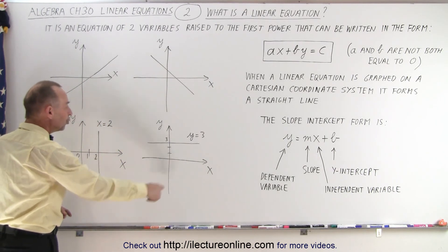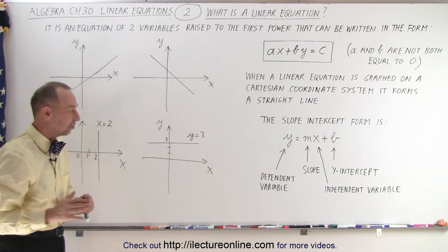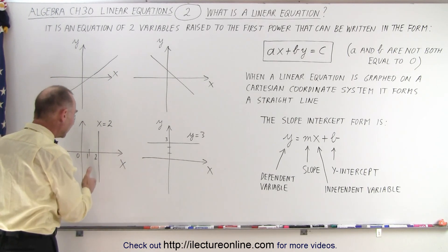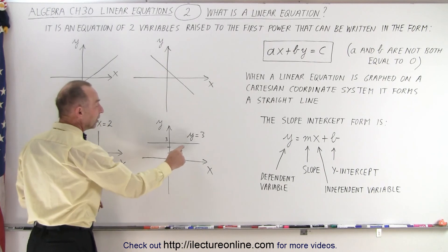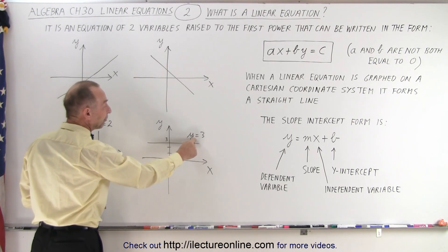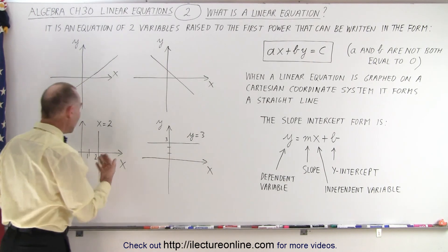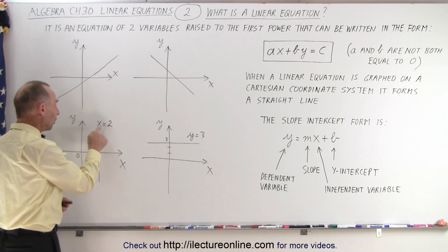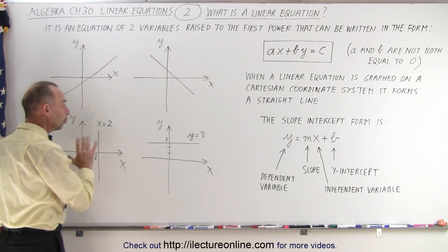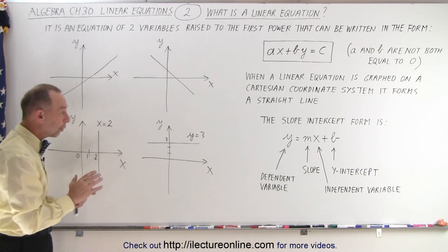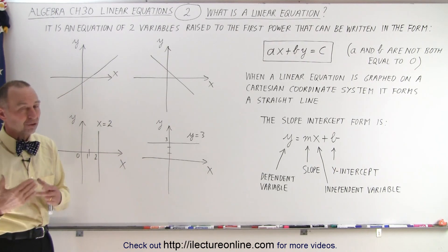Notice that the bottom two graphs are special cases. Here we have a vertical line and here we have a horizontal line. Notice that in this equation we only have one variable, y equals three, and here in this equation we only have one variable, x equals two. So there are special cases where only one of the two variables appears in the equation.